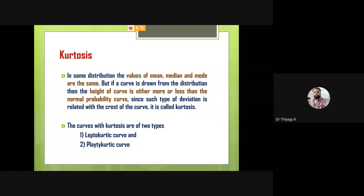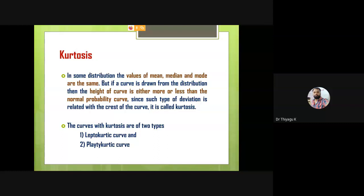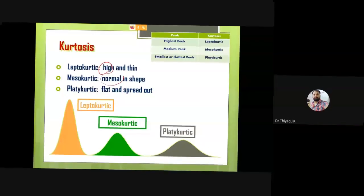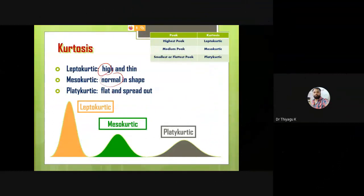Meso is nothing but normal. But we are writing the interpretation based on the normal only. If the curve is more peaked than the normal it is called lepto; the curve more flat than the normal is called platy. We are comparing with the two graphs — two curves based on the normal. The leptokurtic is iron-thin in shape, the mesokurtic is normal in shape, and the platykurtic is flat and wide.